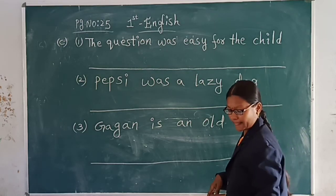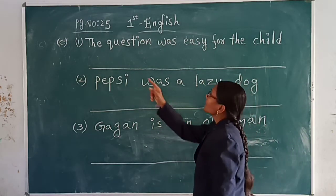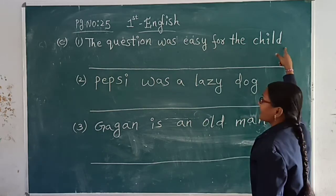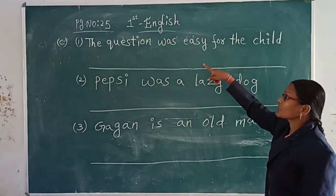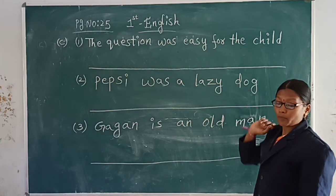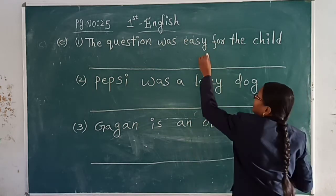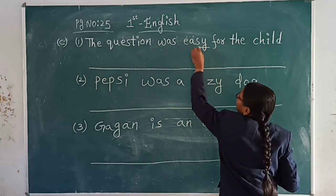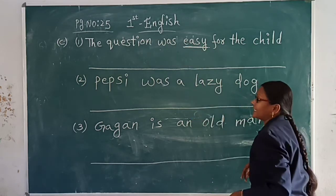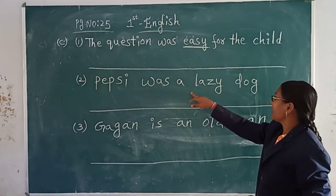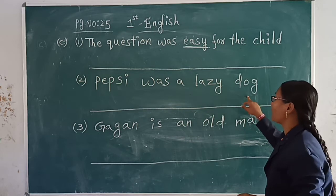Now here — the question was easy for the child. The describing word is easy. The question was easy for the child, so the describing word is easy.